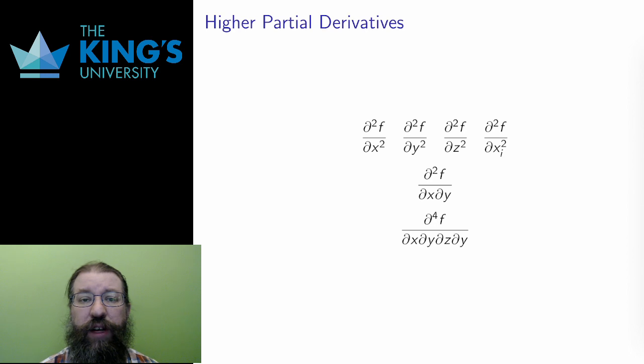Since partials are just single variable derivatives while pretending that the other variables are constant, I can do higher derivatives the same way, taking two or three or four derivatives while I pretend that the other variables are constant. Using Leibniz notation, I indicate this with exponents on the derivatives, as I did for single variable derivatives.